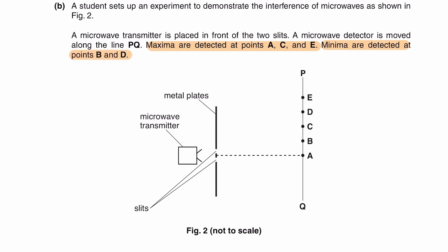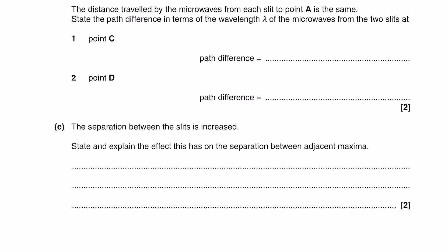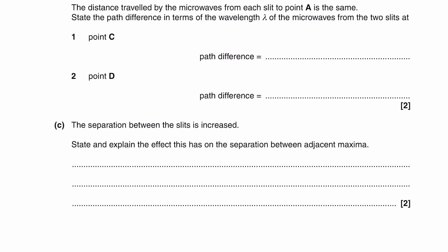And then minima are detected at points B and D. Okay, so let's just put our maxima in purple. So A, C, and E are our maxima. And then our minima we'll put in blue. Those are B and D. Okay, so then our question is asking us or telling us, the distance travelled by the microwaves from each slit to point A is the same. State the path difference in terms of wavelength of the microwaves from the two slits at point C and at point D.